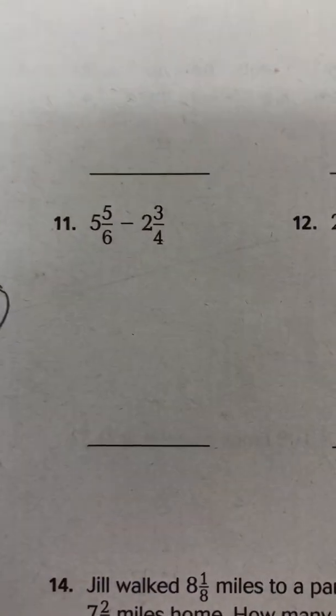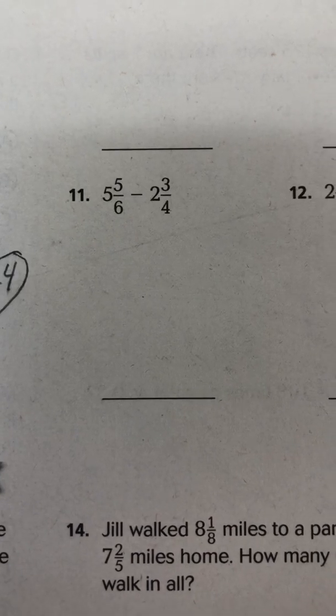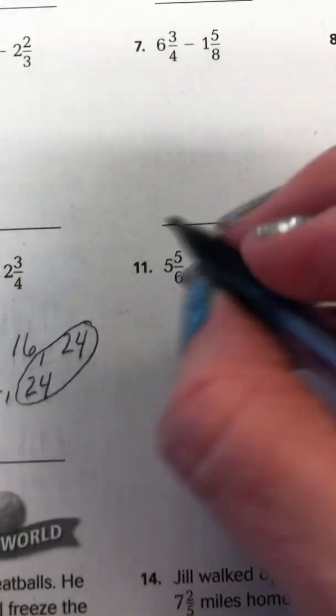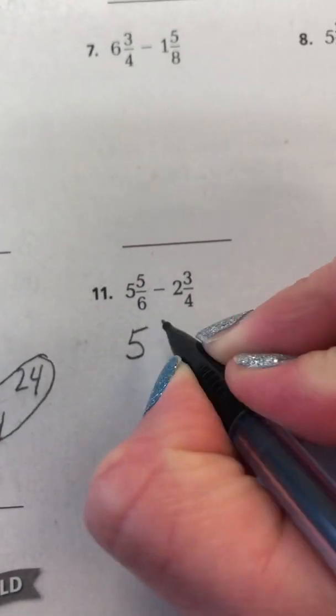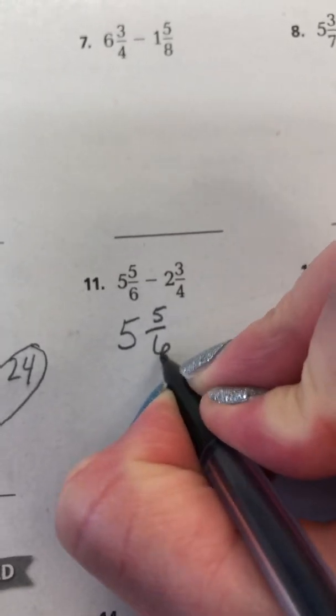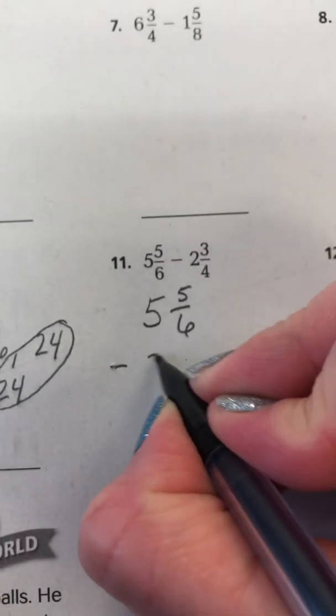Let's try a subtraction one. Let's do 5 and 5 sixths minus 2 and 3 fourths. Same thing. Set it up by rewriting the problem first. 5 and 5 sixths minus 2 and 3 fourths.